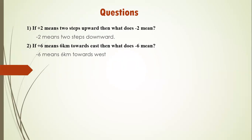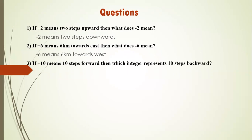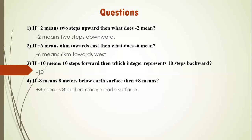Question three: if plus ten means ten steps forward, which integer represents ten steps backward? The opposite of plus ten is minus ten. Question four: if minus eight means eight meters below the earth's surface, what does plus eight mean? The opposite of below is above, so plus eight means eight meters above the earth's surface.